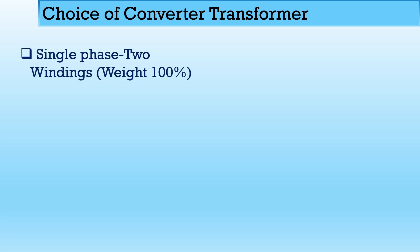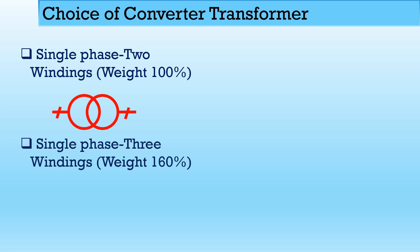There are four choices for the converter transformer. The first is a single-phase two-winding transformer — take its weight as 100% — with one primary and one secondary, supplied by single-phase supply; three units can be connected in star or delta as required. The second is a single-phase three-winding transformer, with one primary winding and two secondary windings, all connected to single phase; three such transformers can be connected to form a star-star, star-star-delta configuration, forming a three-phase unit.